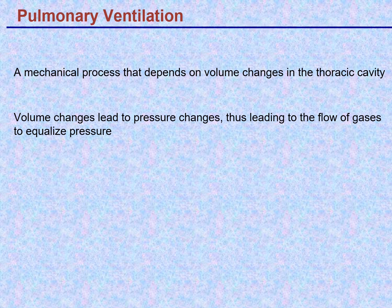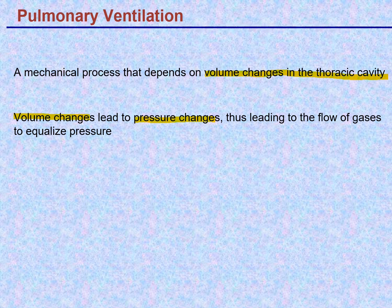When you breathe, you carry out a mechanical process mediated by voluntary skeletal muscles that depends on volume changes in the thoracic cavity. Those volume changes cause pressure changes. If there's a difference between intrapulmonary pressure and atmospheric pressure, gas will flow to equalize it — if intrapulmonary is higher than atmospheric and airways are open, air flows out; if it's lower than atmospheric, air flows in.